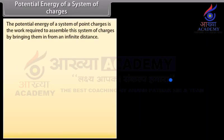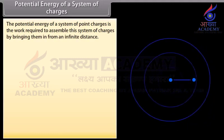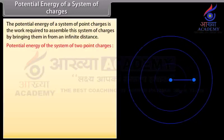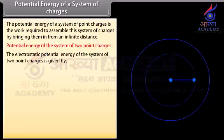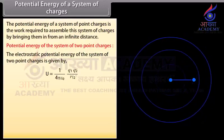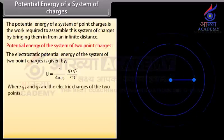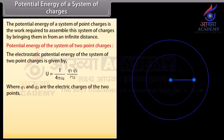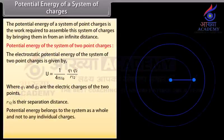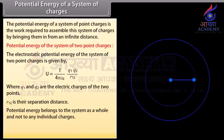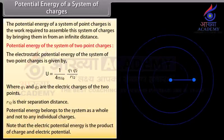The electric potential energy of a system of point charges is the work required to assemble the system by bringing them in from infinite distance. The electrostatic potential energy of a system of two point charges is given by U equals 1 upon 4πε₀ multiplied by Q₁Q₂ upon R₁₂, where Q₁ and Q₂ are the electric charges and R₁₂ is their separation distance. Potential energy belongs to the system as a whole, not to any individual charge. Note that electric potential energy is the product of charge and electric potential.